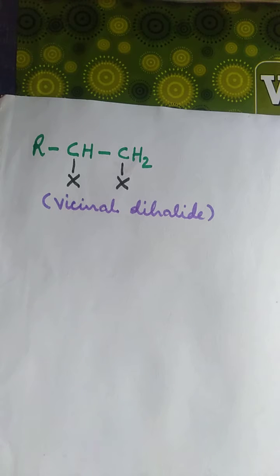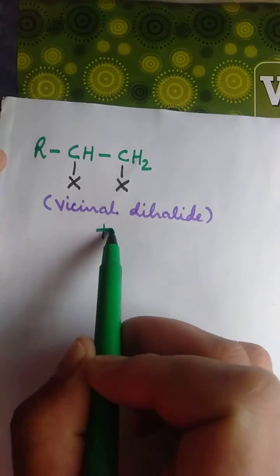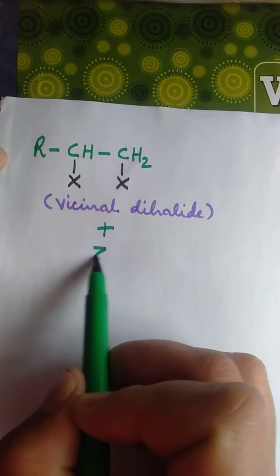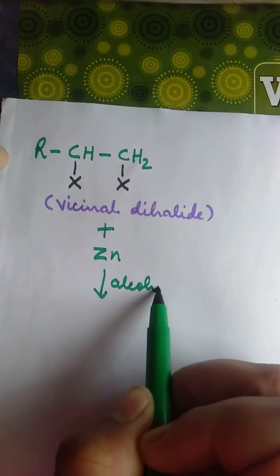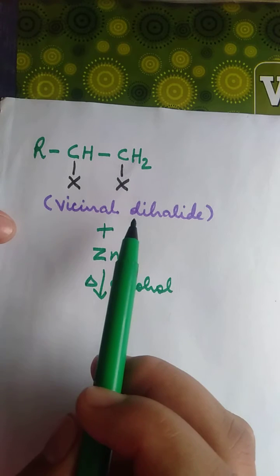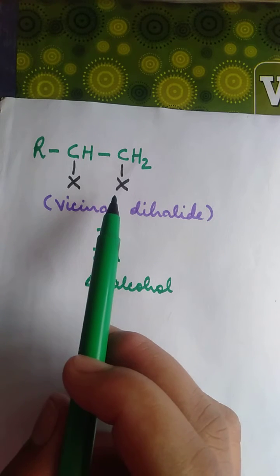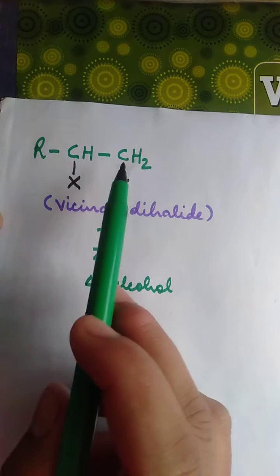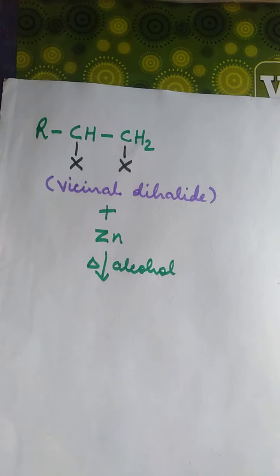Let us see what will happen when vicinal dihalide is treated with zinc dust in alcohol medium. What is this vicinal dihalide? It is a compound having two halogen atoms on the adjacent carbon atoms.